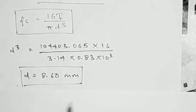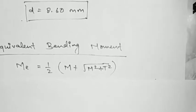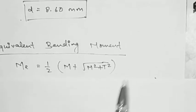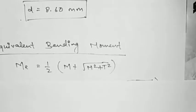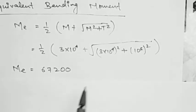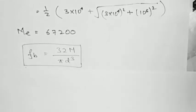Once we have calculated D using the equivalent twisting moment, next we calculate D using the equivalent bending moment. The formula for equivalent bending moment is: M_E = (1/2) × [M + √(M² + T²)]. Putting in all the values of M and T, M_E comes out to be 67200 N·mm.